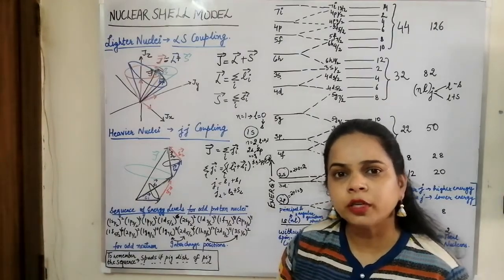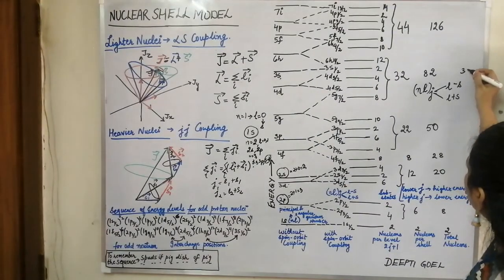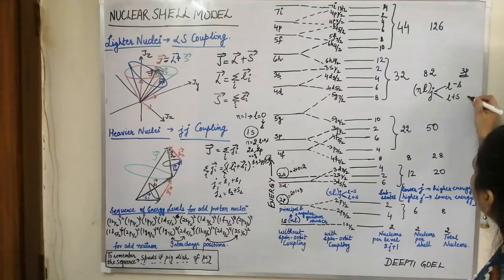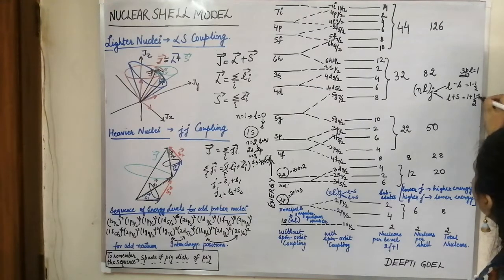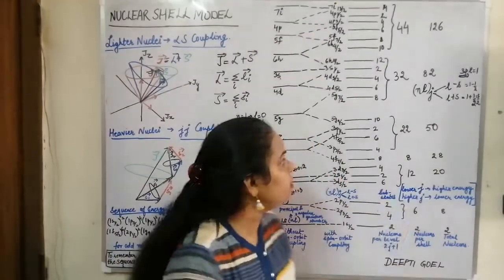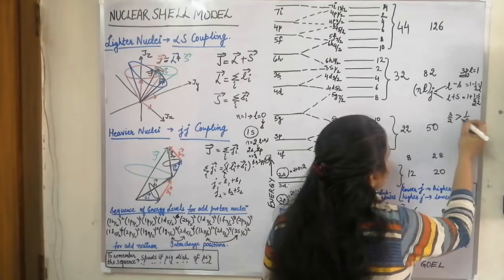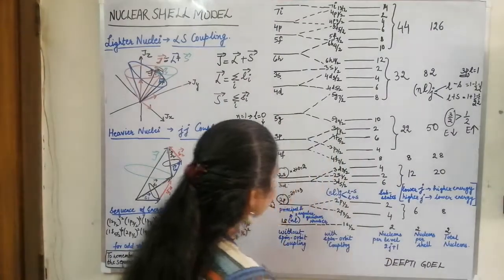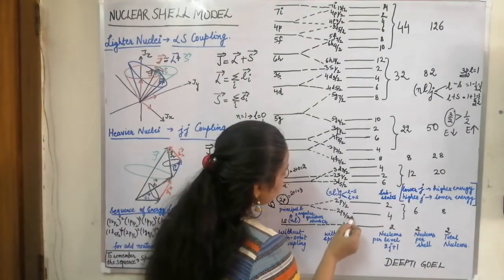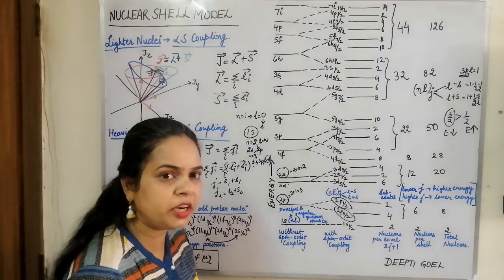Taking the example of 3p: for p, L equals 1. So J takes values 1 plus half equals 3/2 and 1 minus half equals 1/2. Since 3/2 is greater than 1/2, the energy level with J=3/2 will be lower and J=1/2 will be at a higher position. So 2p 3/2 is placed at lower energy and 2p 1/2 at higher energy — this is the inverted energy state.